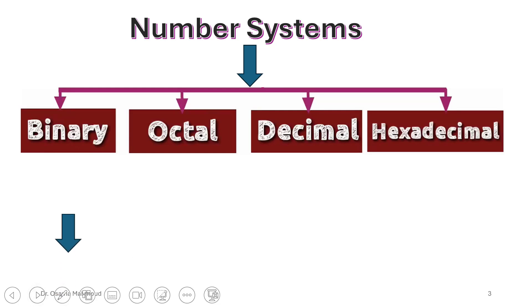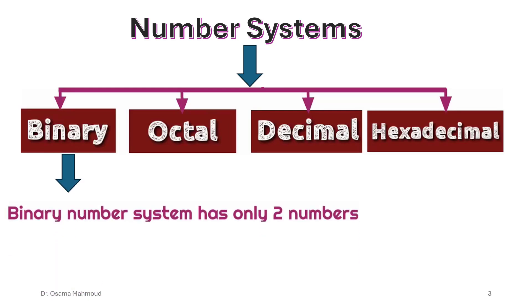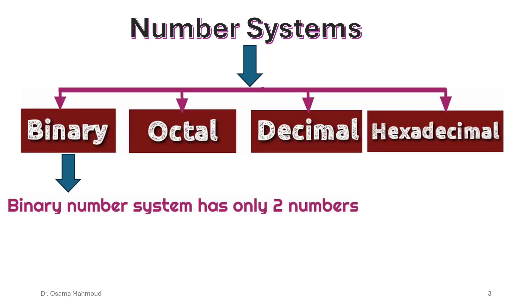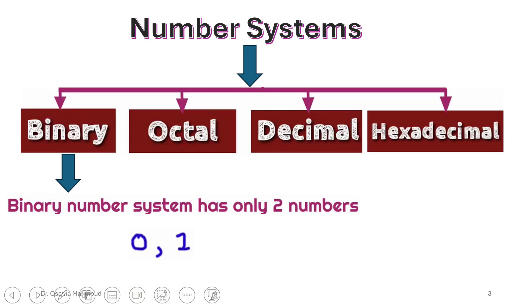The next one, we know the binary, which from the name means it has two numbers: 0 and 1. So our base is 2.